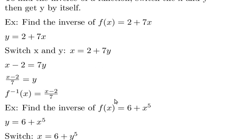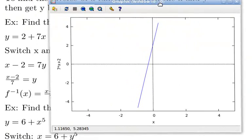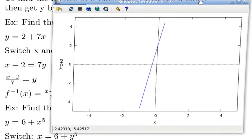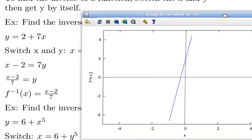Let's go to the previous example, 2 + 7x. Here is 2 + 7x. It's a line. So let's plot the inverse as well.